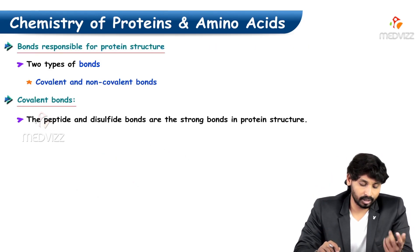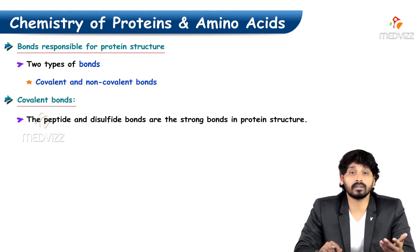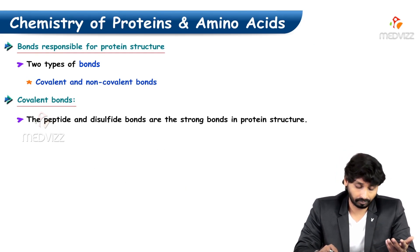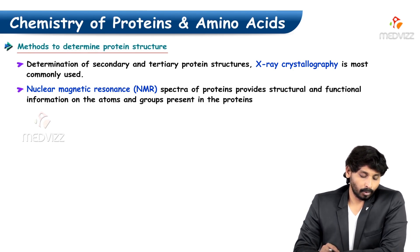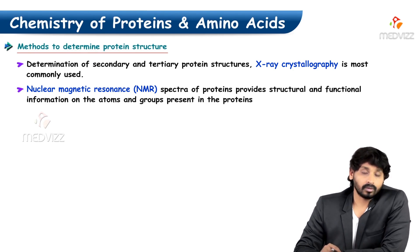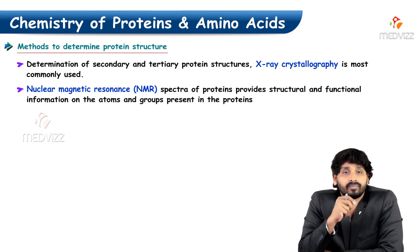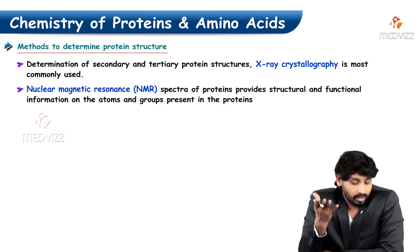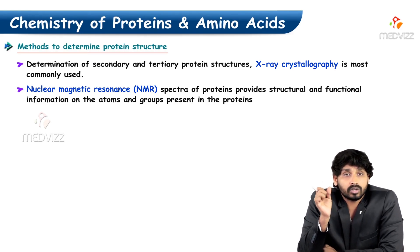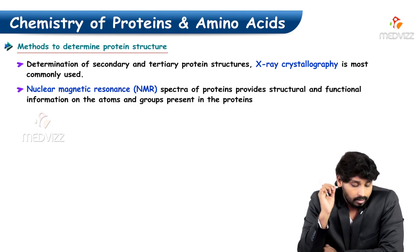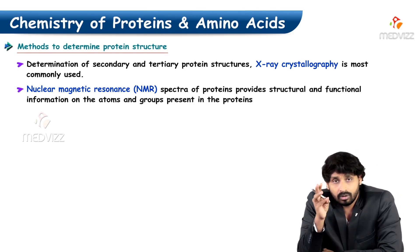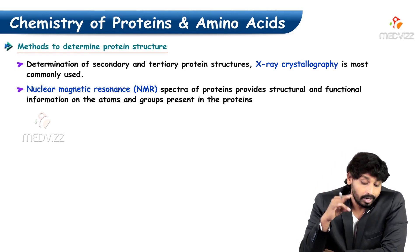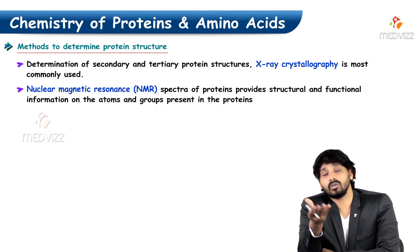The bonds responsible for protein structures include covalent bonds and non-covalent bonds. Methods to determine protein structure include X-ray crystallography and nuclear magnetic resonance (NMR).